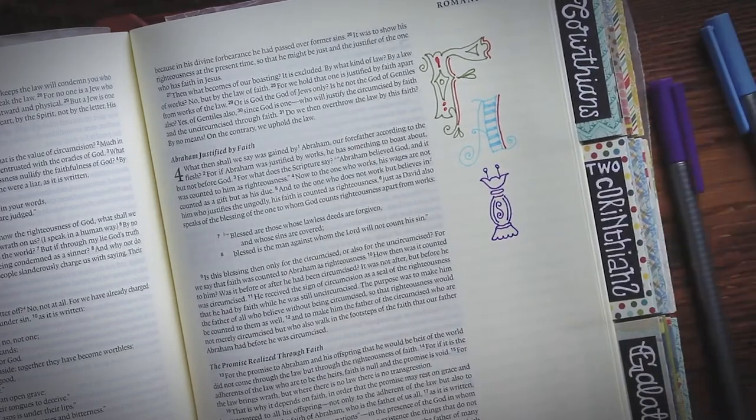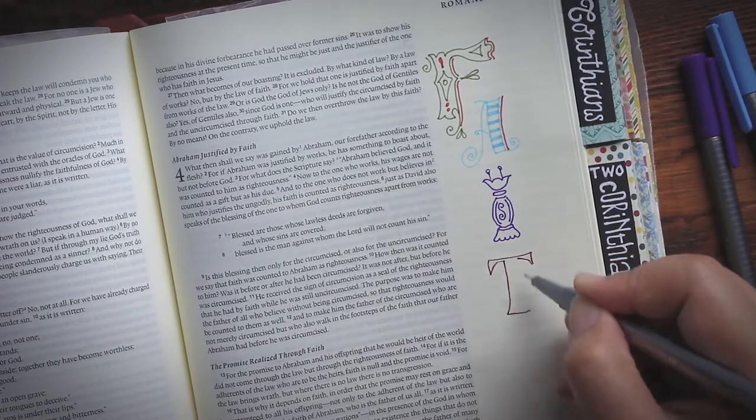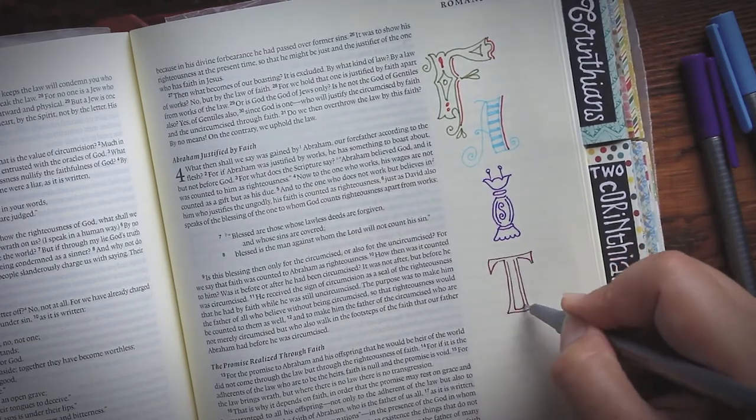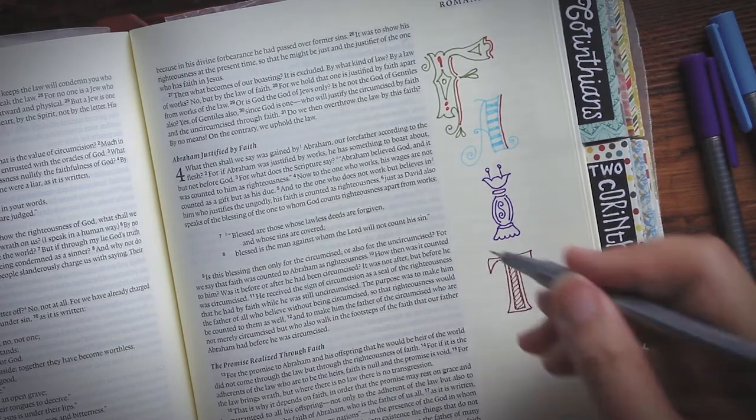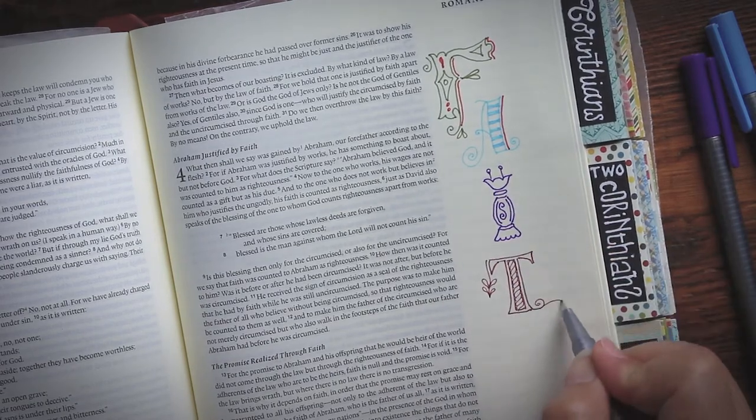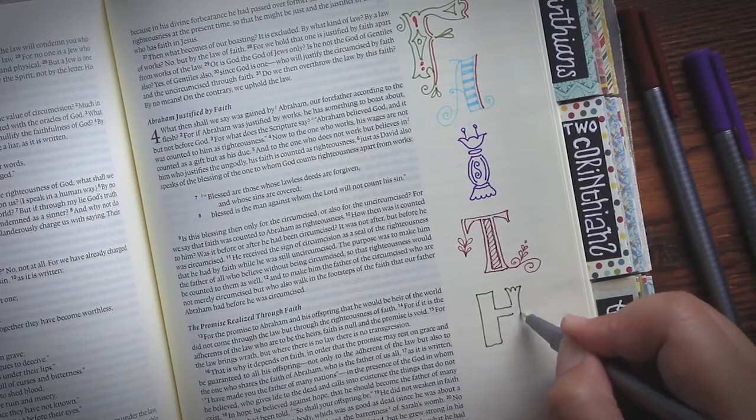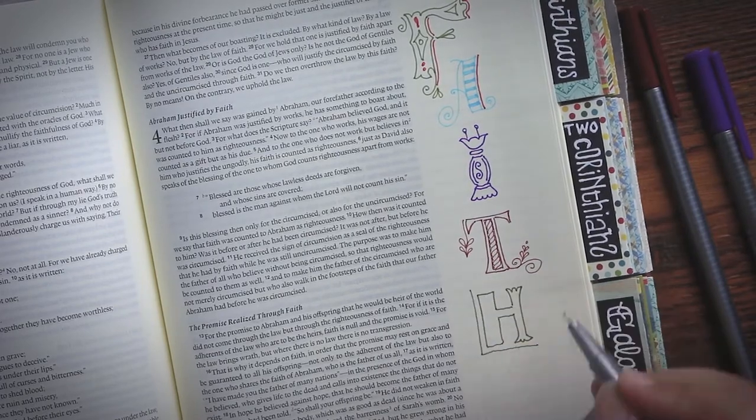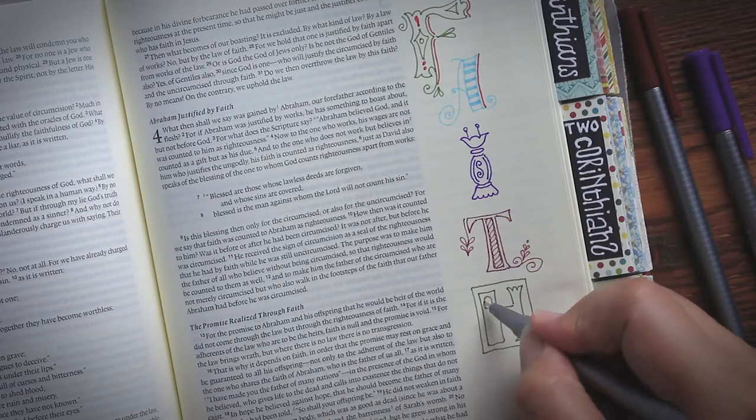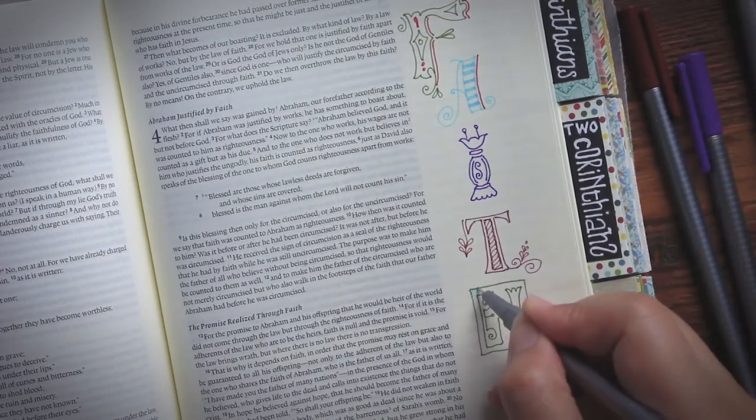I mentioned a while back that Staedtler writes thinner .3 mm lines, while Stabilo is a bit thicker at .4 mm. You might ask on that basis, which is better? Actually, the choice between .4 or .3 is a matter of personal preference. Which one are you more comfortable using? It's really up to you.